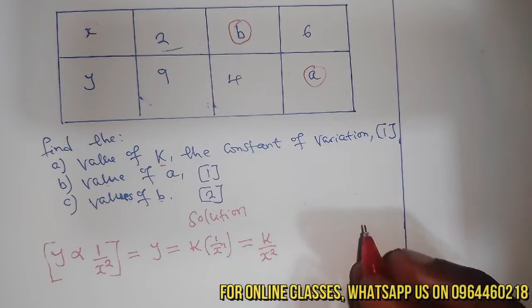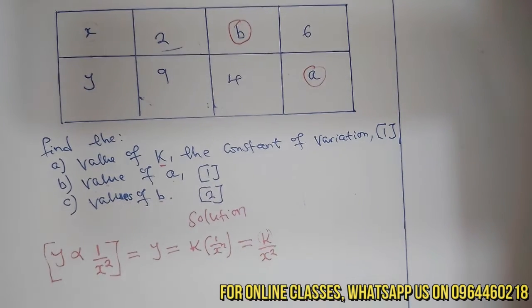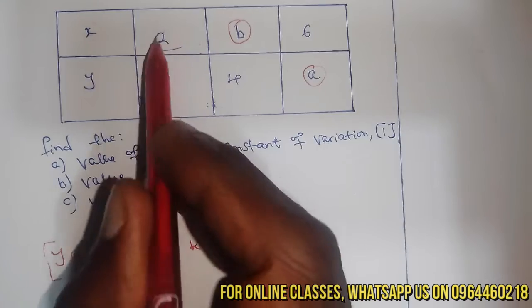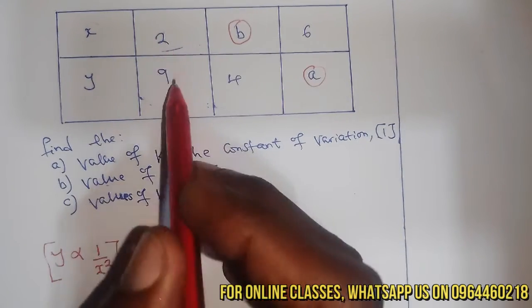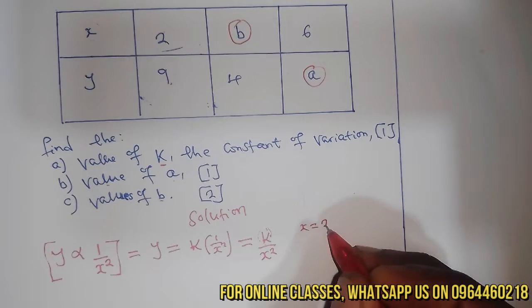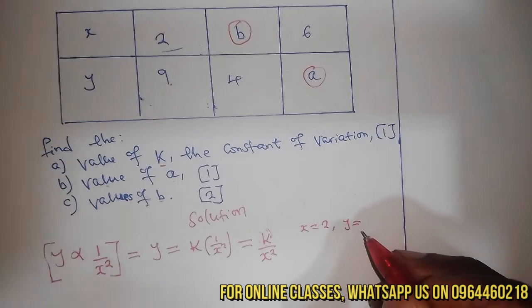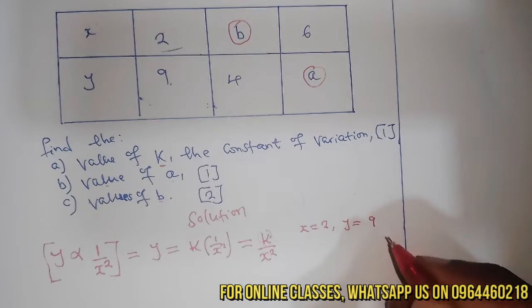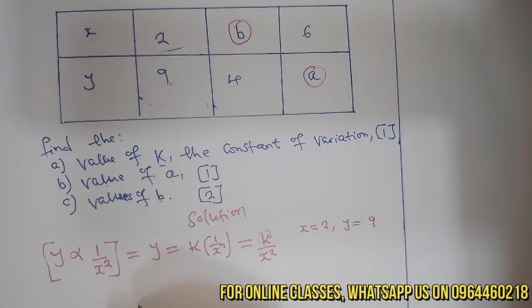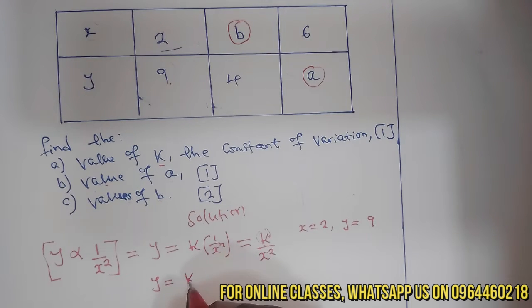Now going back to the table, to find k we need to look at the complete set of corresponding values. We have x = 2 and y = 9 as our known pair.